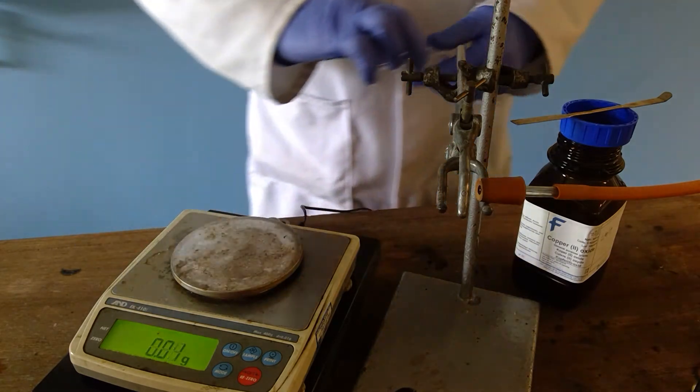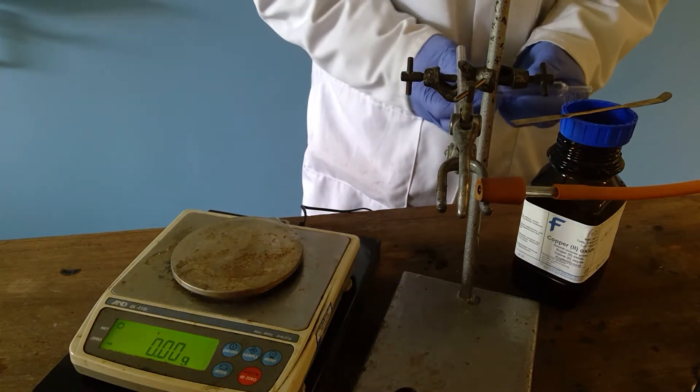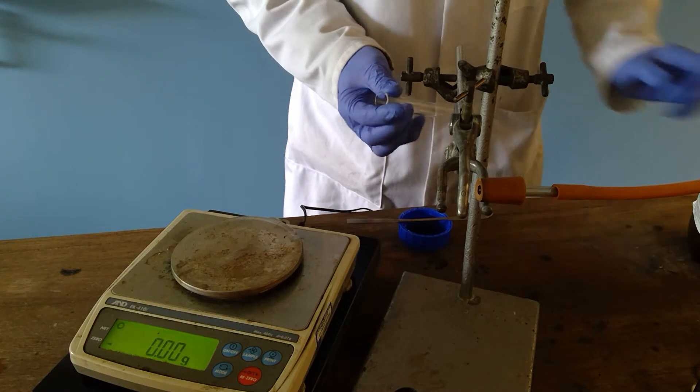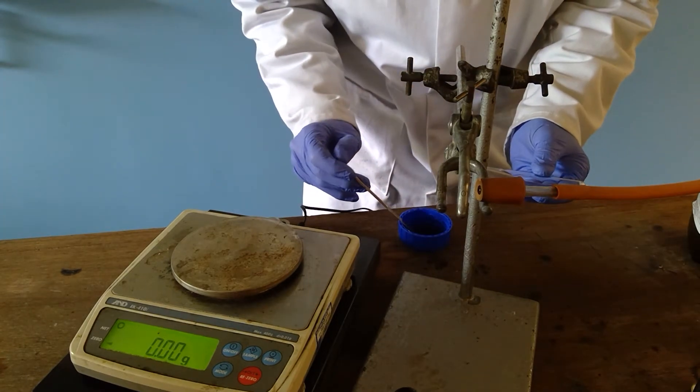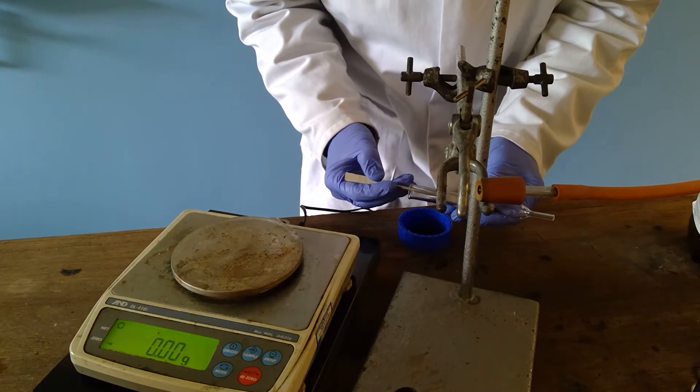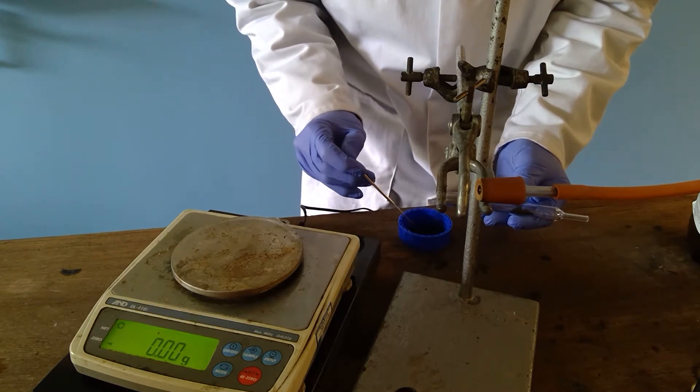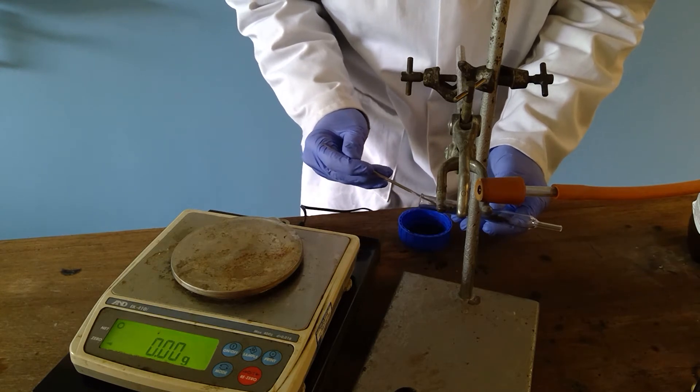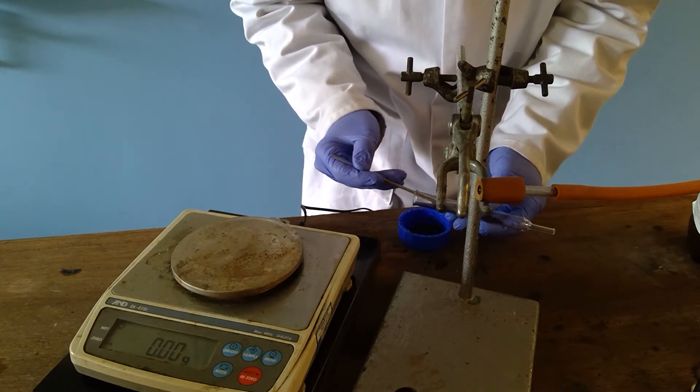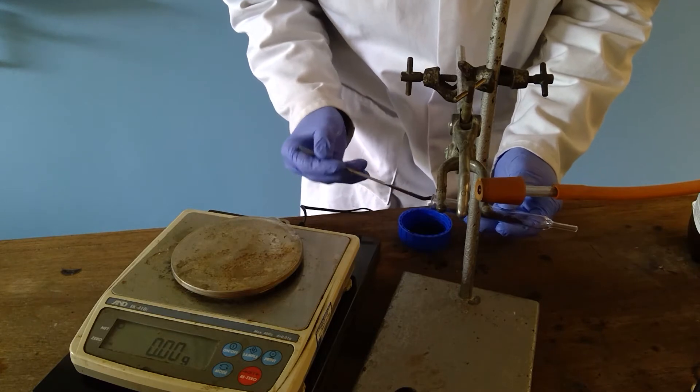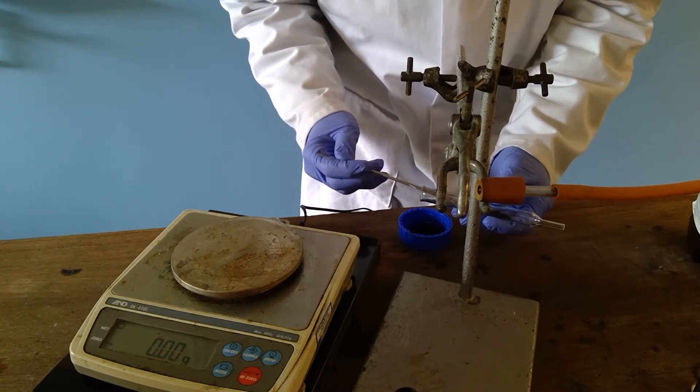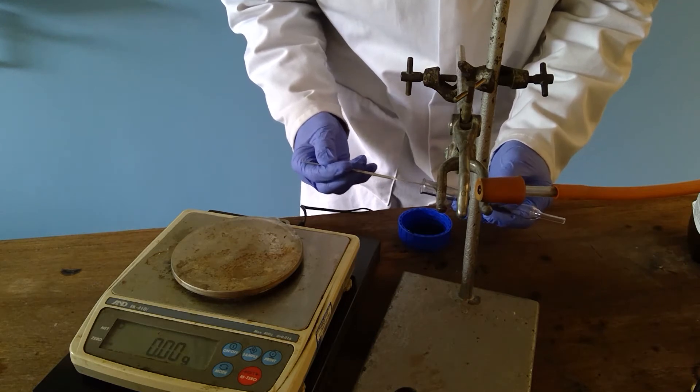I will then place some copper oxide into the combustion tube. The copper oxide here has just been poured into the lid to make it easier to transfer. I will try to put as much of the copper oxide into the middle of the tube so that we are able to heat it effectively, also making sure that not too much is near the bung, but still trying to spread it out as much as possible.